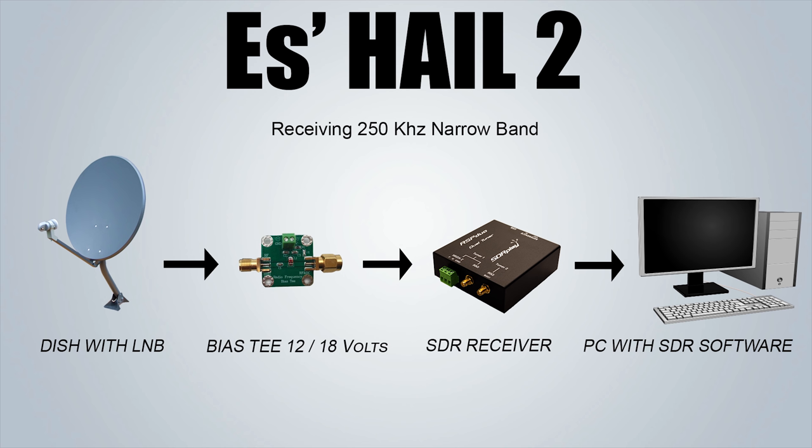Luckily, I can demonstrate the reception of Es'hail-2 by means of a Web SDR, which has been set up by the British Amateur Television Club at an Es'hail-2 ground station at Goonhilly Earth Station in Cornwall, UK. This Web SDR is available for anyone around the world who has an internet connection to take a listen to the narrowband section, and you can even tune around and change modes.